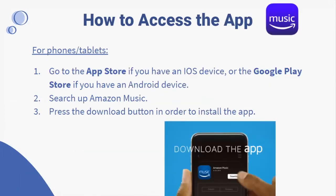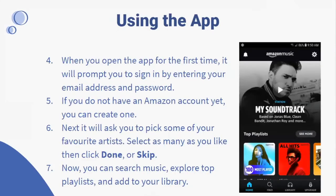How to access the app on phones and tablets: go to the App Store if you have an iOS device, or Google Play if you have an Android device. Search for Amazon Music and press the download button to install the app. When you open the app for the first time, it will prompt you to sign in by entering your email and password. If you don't have an Amazon account yet, you can create one.